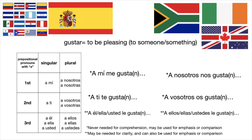There are corresponding prepositional phrases that go with the first person and second person too. They're never needed for clarity because me always means 'me,' te always means 'you,' nos always means 'us,' and os always means 'you guys.' But I can use them if I want to be emphatic or make a comparison. So if I want to say 'I like books,' I would say a mí me gustan los libros — and again, I cannot drop the me even though I have a mí.